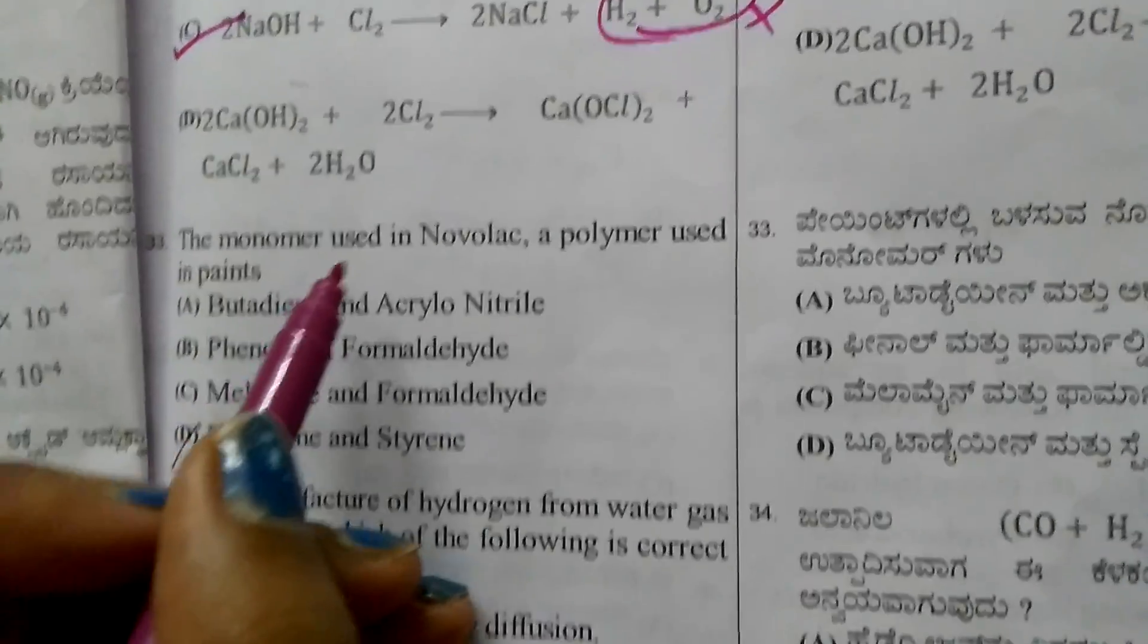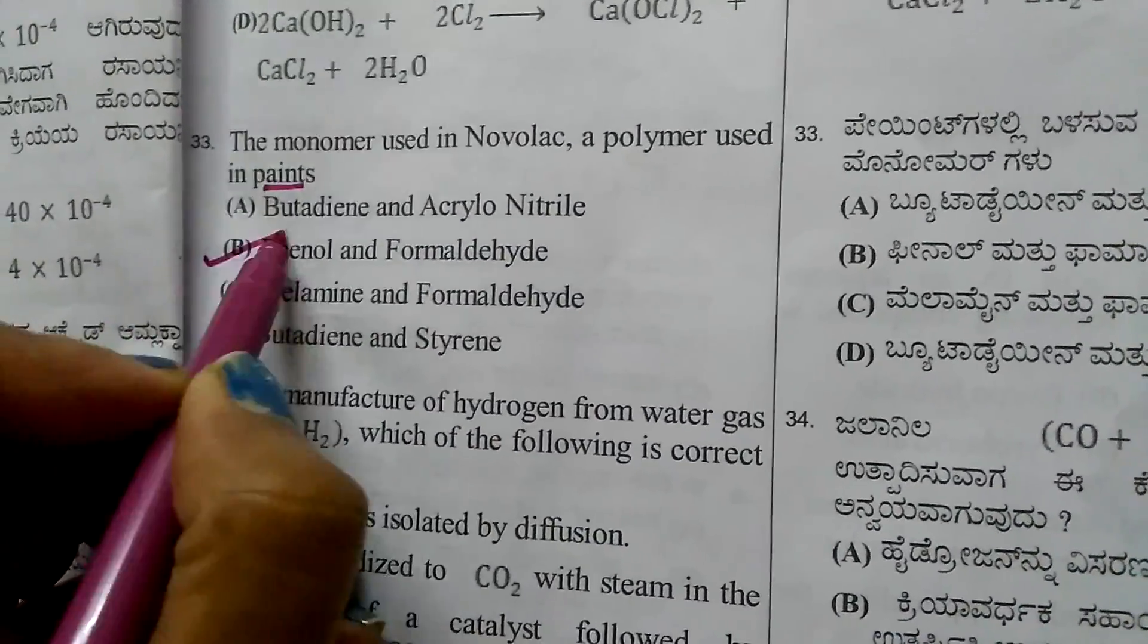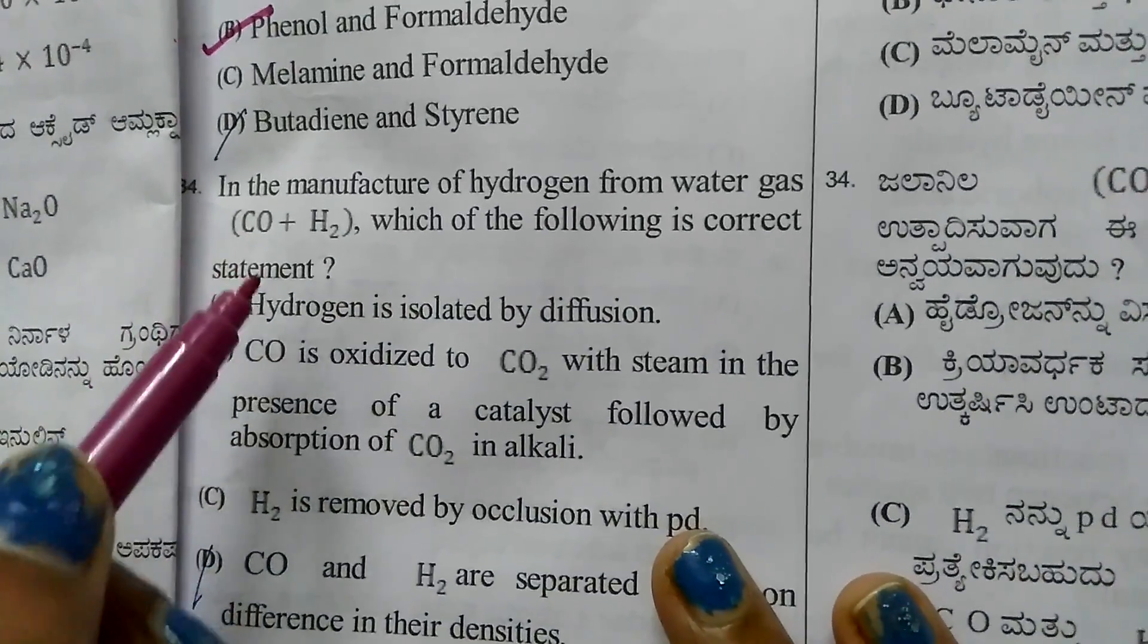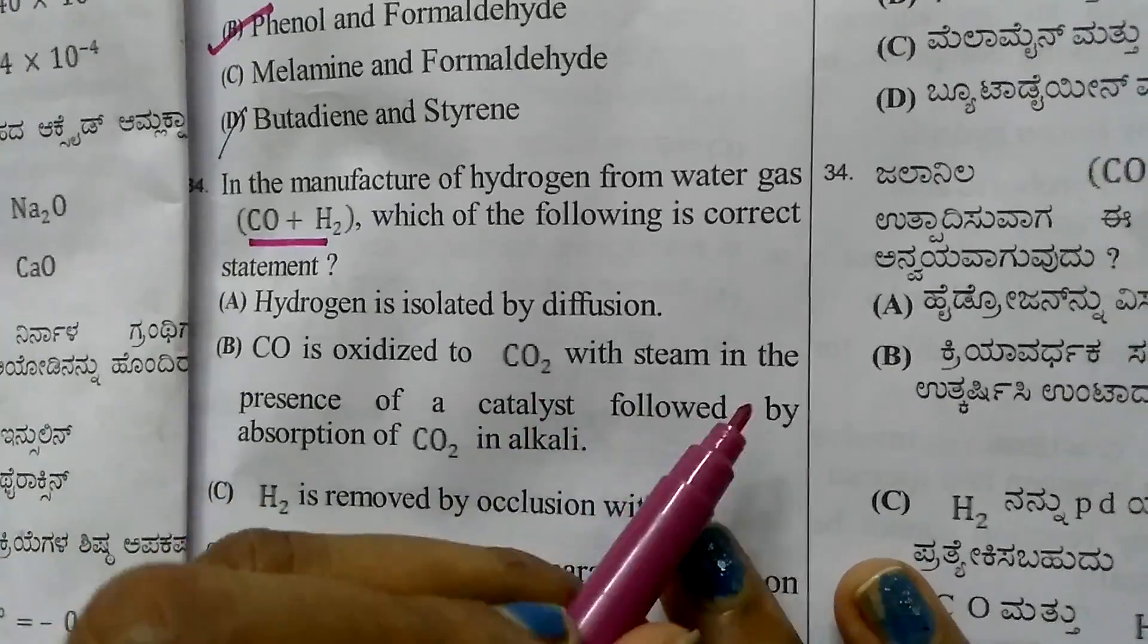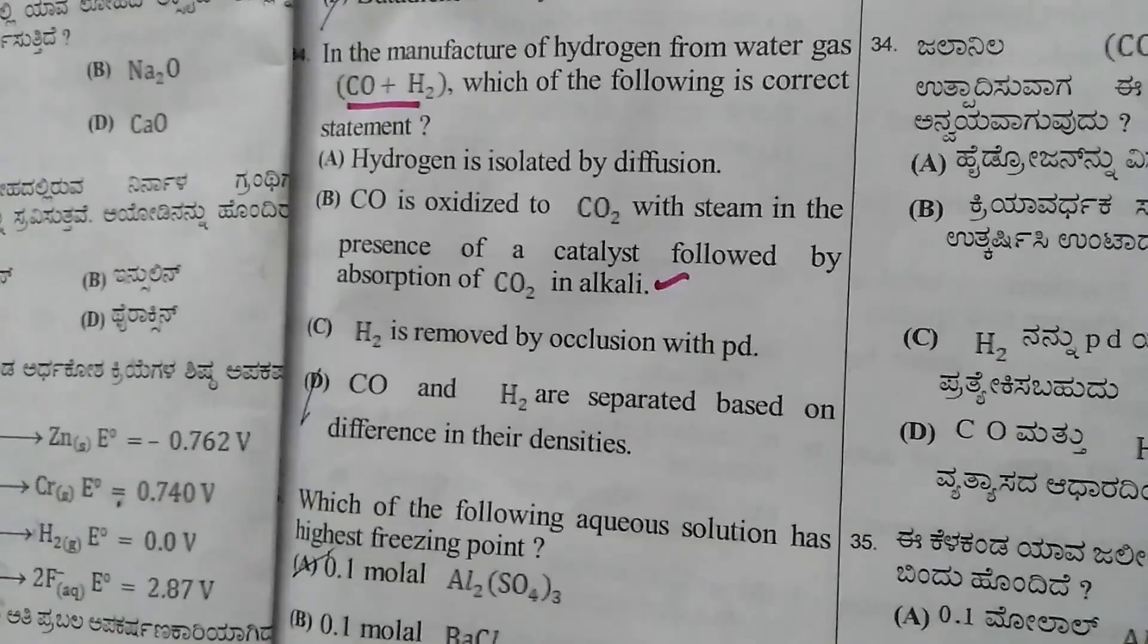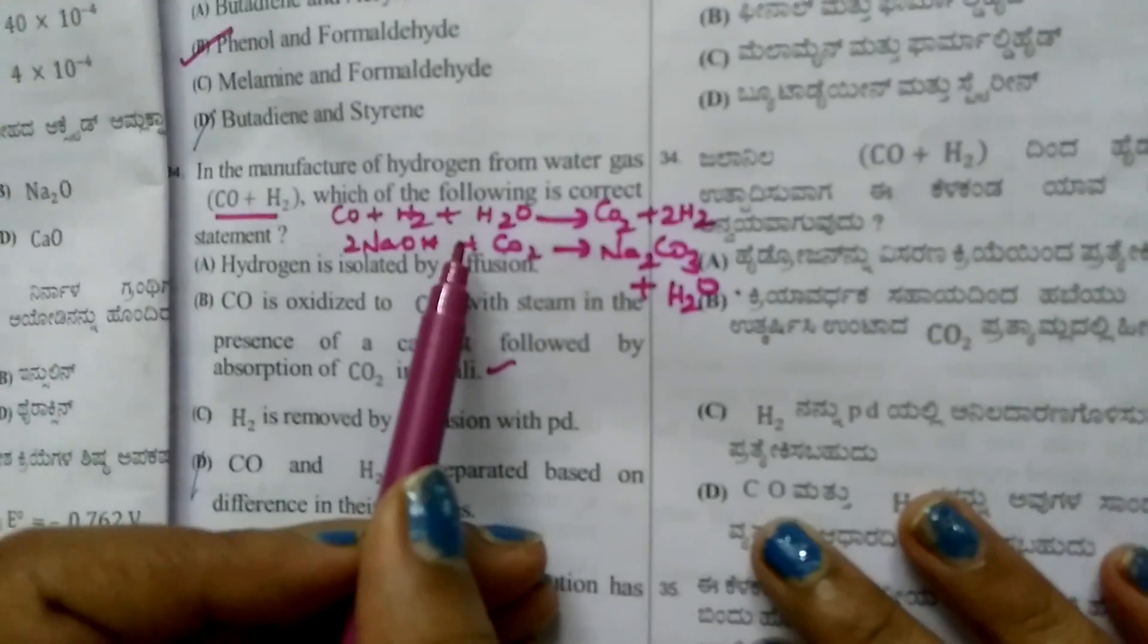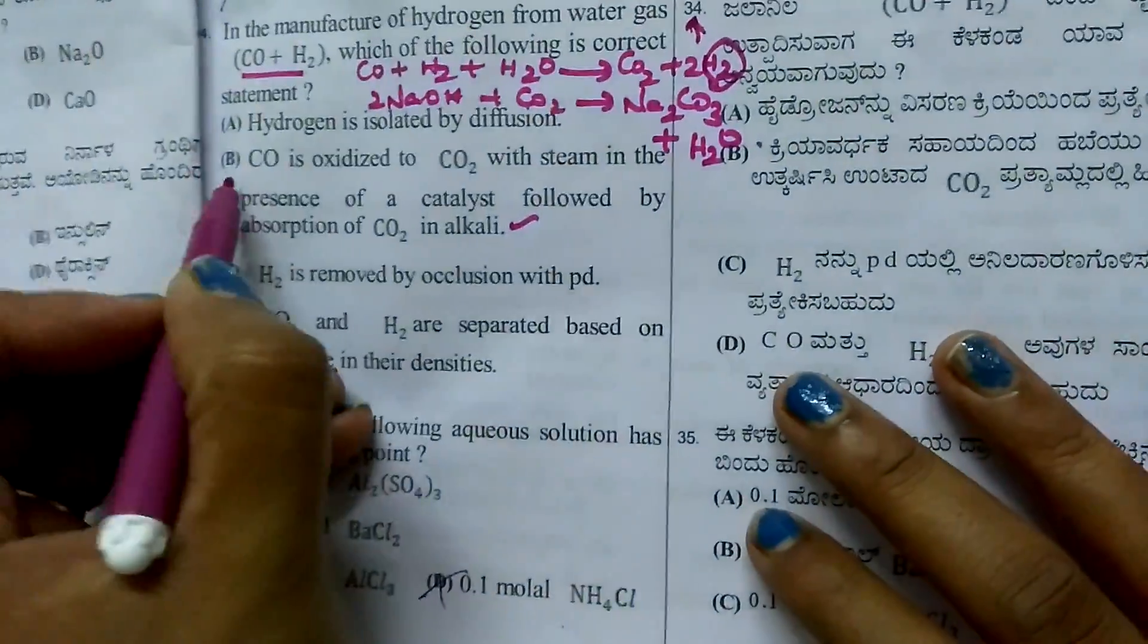Question 33: The monomer used in Novolac polymer used in paints is phenol and formaldehyde. Question 34: In manufacturing hydrogen from water gas, CO is oxidized to CO2 with steam in the presence of catalysts, followed by absorption of CO2 in alkali. Water gas reacts with steam to form CO2, which is absorbed by alkali, giving pure hydrogen. The answer is option B.